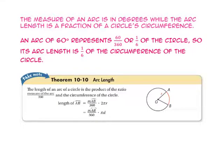The measure of an arc is in degrees, while the arc length is a fraction of a circle's circumference. An arc of 60 degrees represents 60 out of 360, or one sixth of the circle, so its arc length is one sixth of the circumference of the circle.